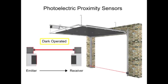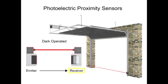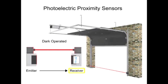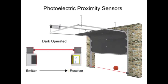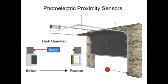In this dark-operated mode example, the beam of light is being received by the garage door receiver. When a target enters the beam of light, it activates the switch, which will stop the garage door from closing.